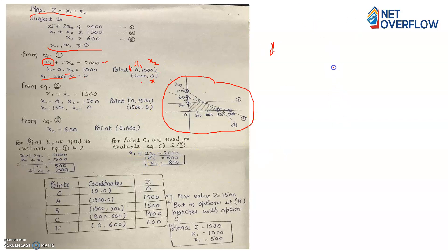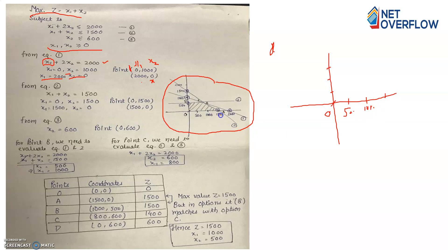Now you need to plot this equation on a graph, just like we do in class 8 or 9. Mark the axes with intervals of 500: so 500, 1000, 1500, 2000 on both axes. Plot the point (0, 1000) on the y-axis and (2000, 0) on the x-axis, then join them to get line number 1.